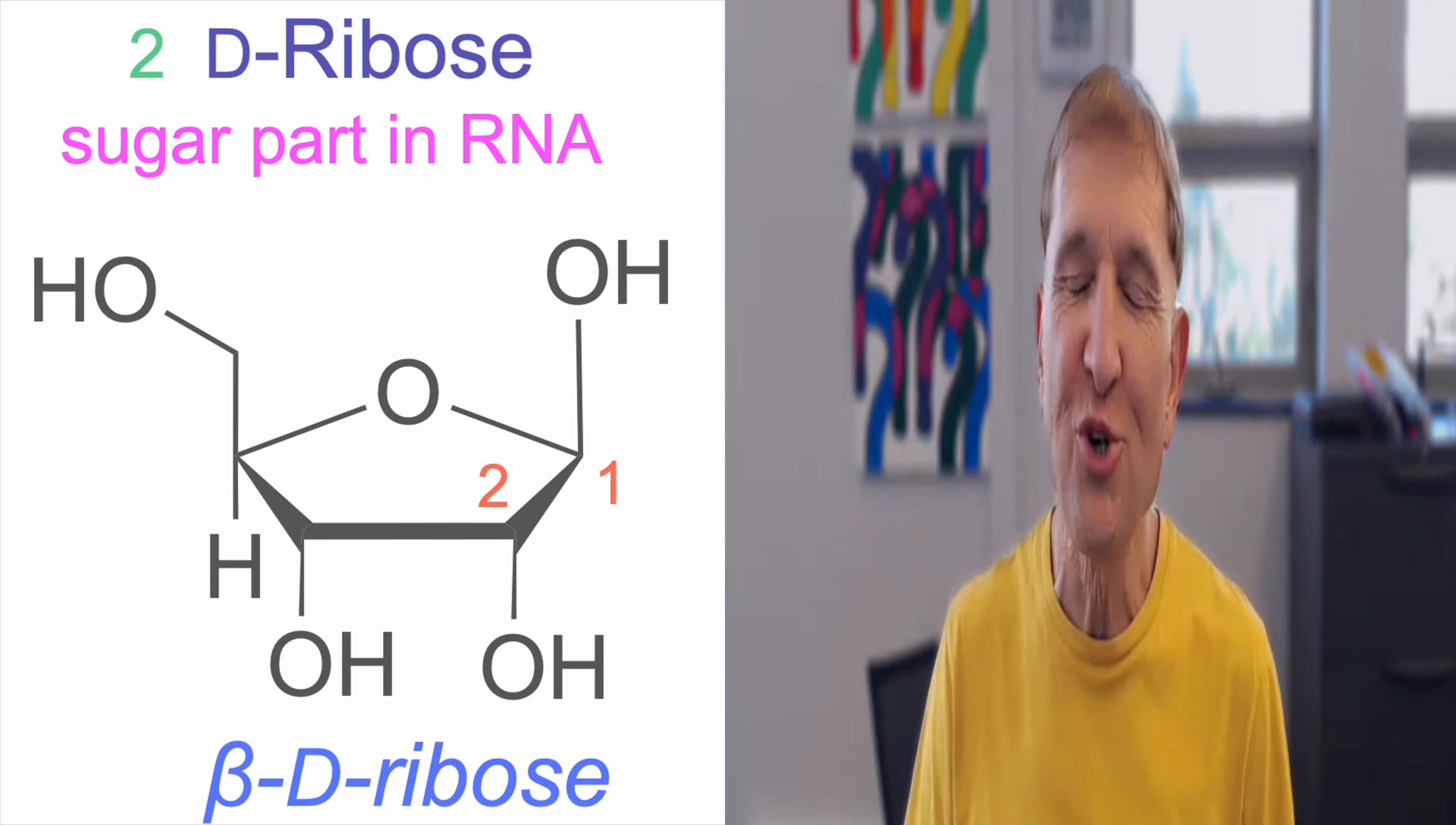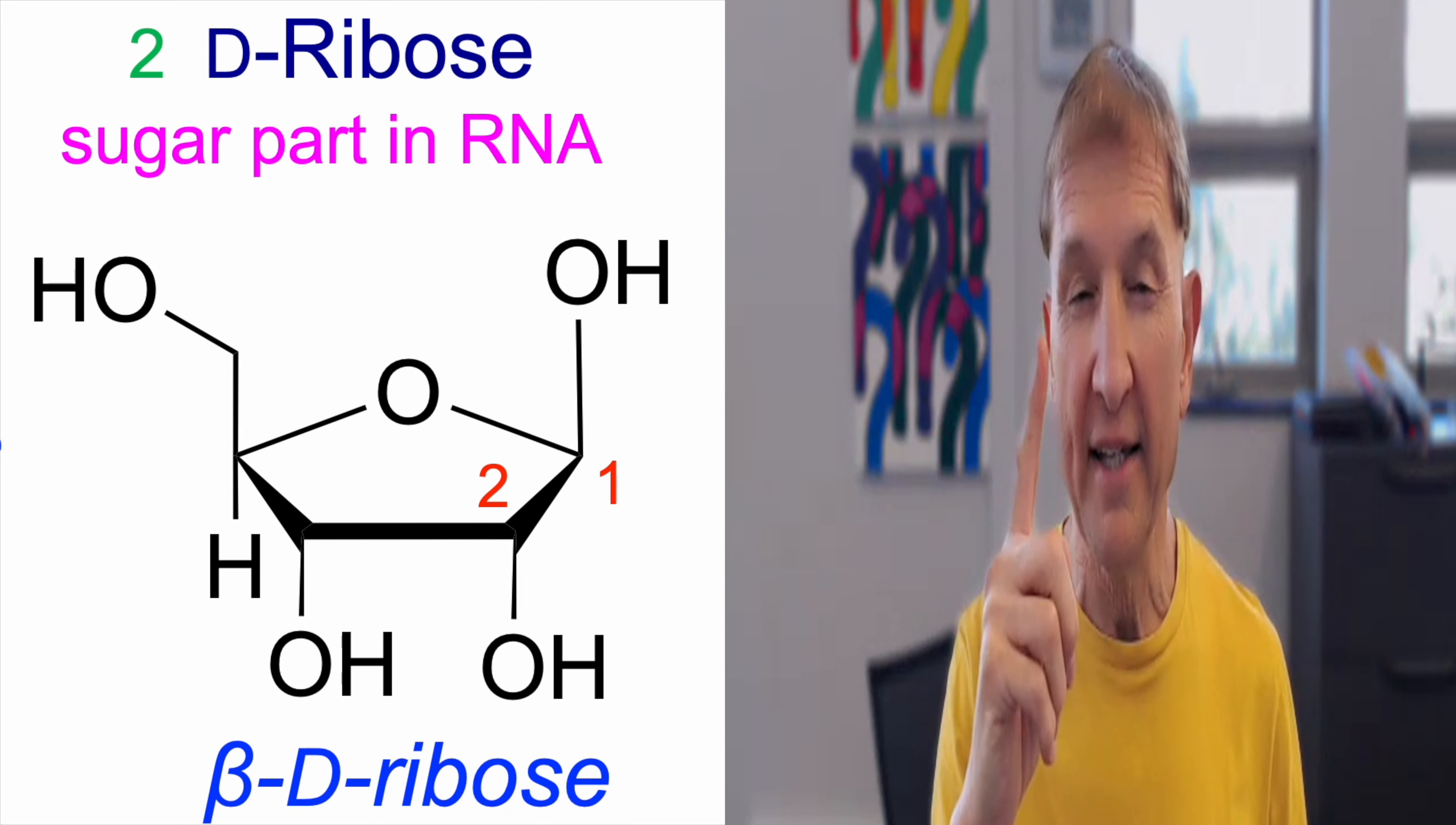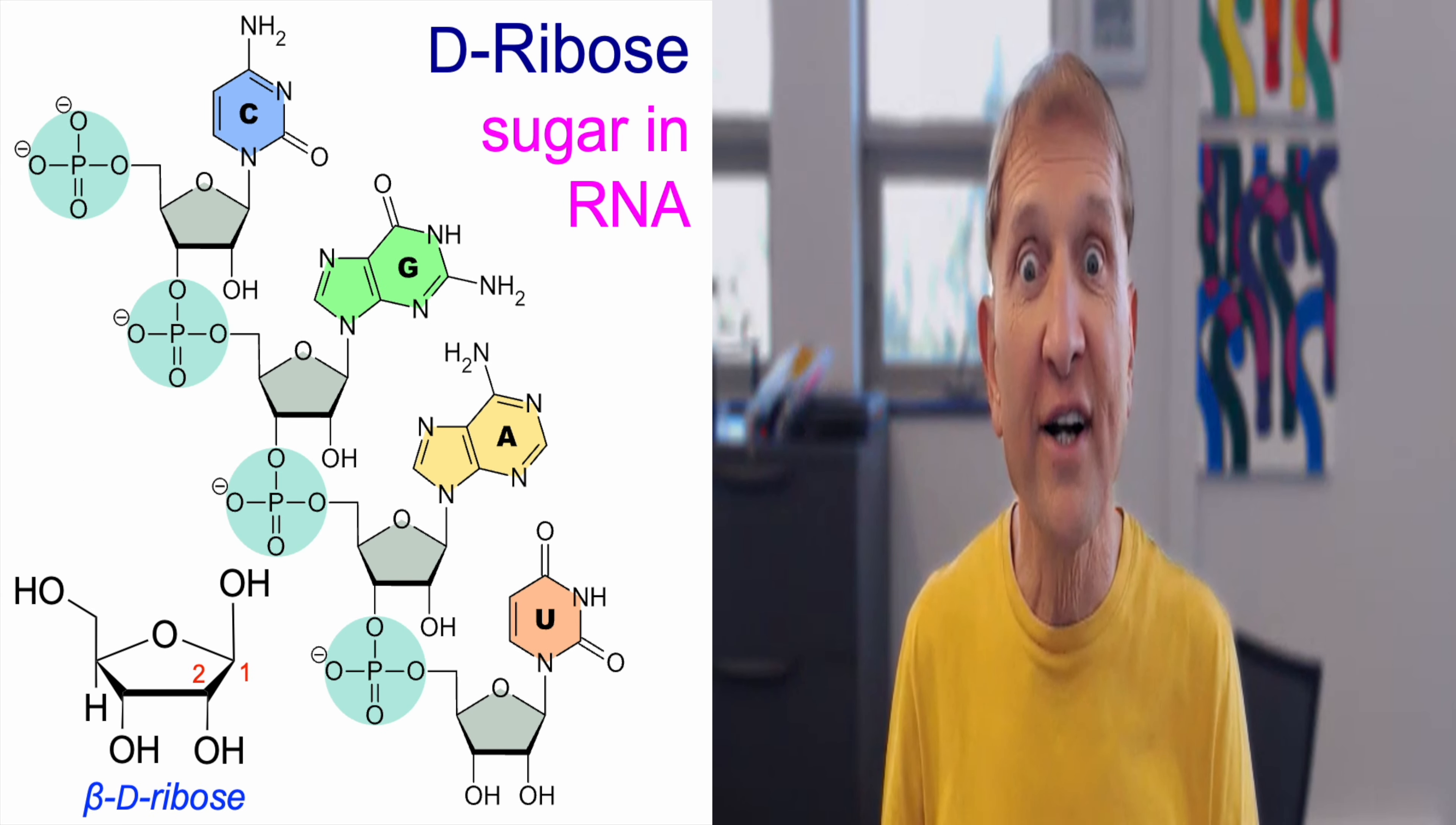Monosaccharide number two, D-ribose. This is beta D-ribose because the anomeric OH at C1 is pointing on the same side as the CH2OH. We'll say more about that too. This is important because this is the sugar part that's repeated over and over again in RNA.